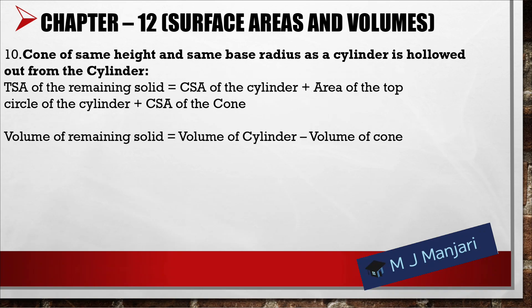Tenth, cone of same height and same base radius as a cylinder hollowed out from the cylinder: total surface area of remaining solid = curved surface area of cylinder + area of top circle of cylinder + curved surface area of cone; volume of remaining solid = volume of cylinder − volume of cone.